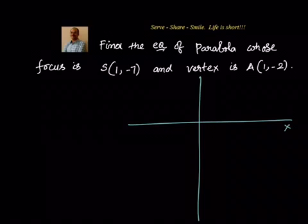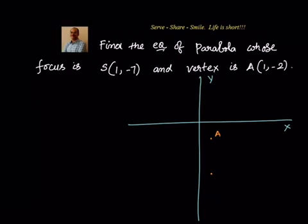Let us say this is our x-axis and this is our y-axis. The vertex is at (1, -2) — let's mark that as point A. And (1, -7) is where we have the focus.